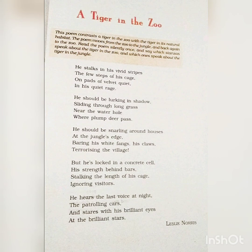He hears the last voice at night — the patrolling cars. A patrol car is a police car used for patrolling streets, taking rounds at regular intervals. The last voice he listens to at night is the patrol car. And he stares with his brilliant eyes at the brilliant stars — he can see the stars with his bright eyes.